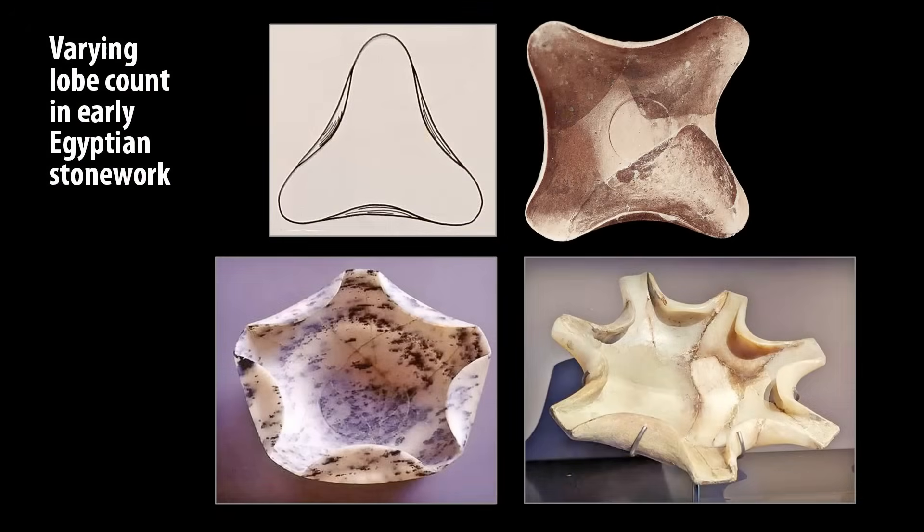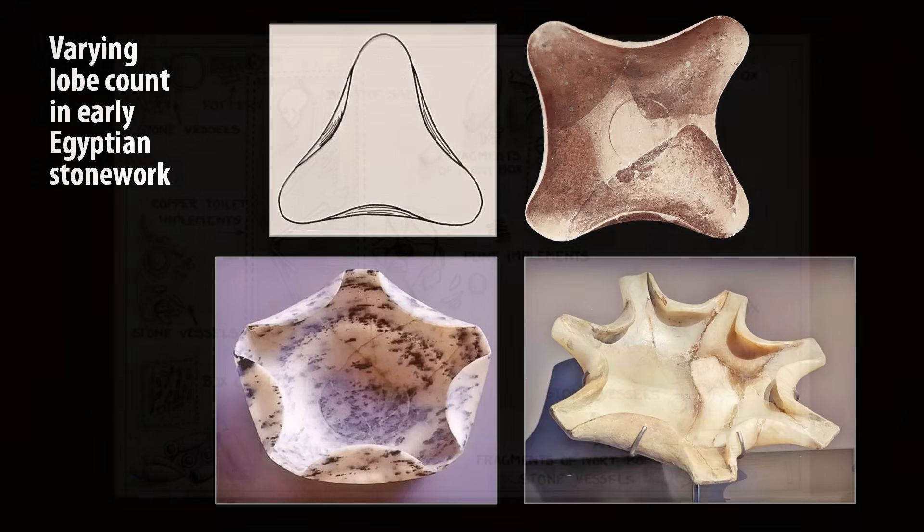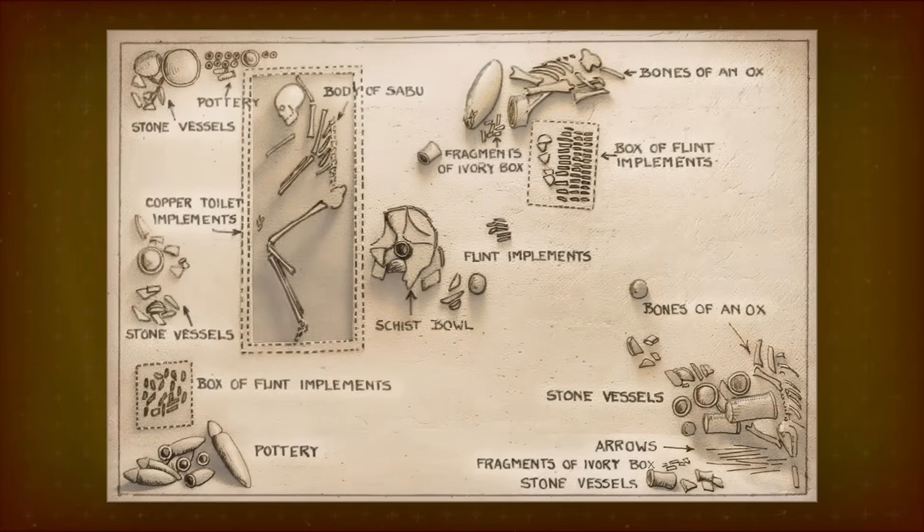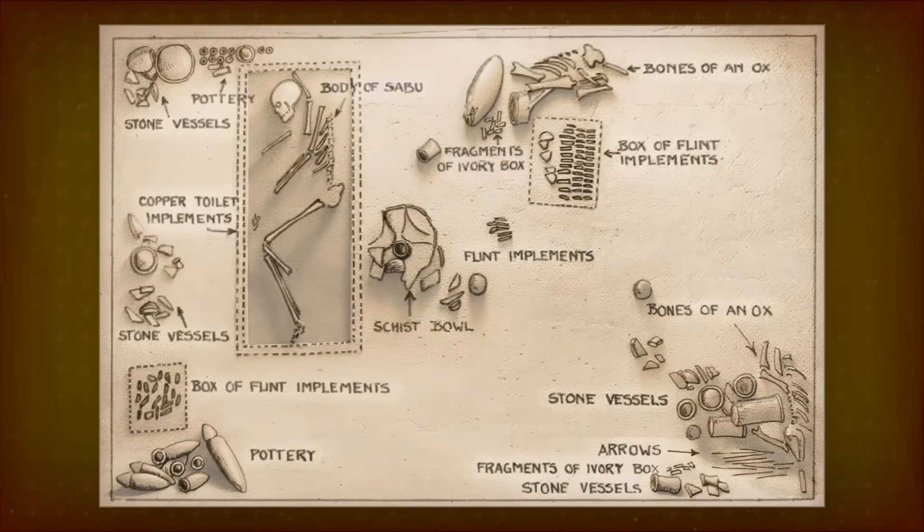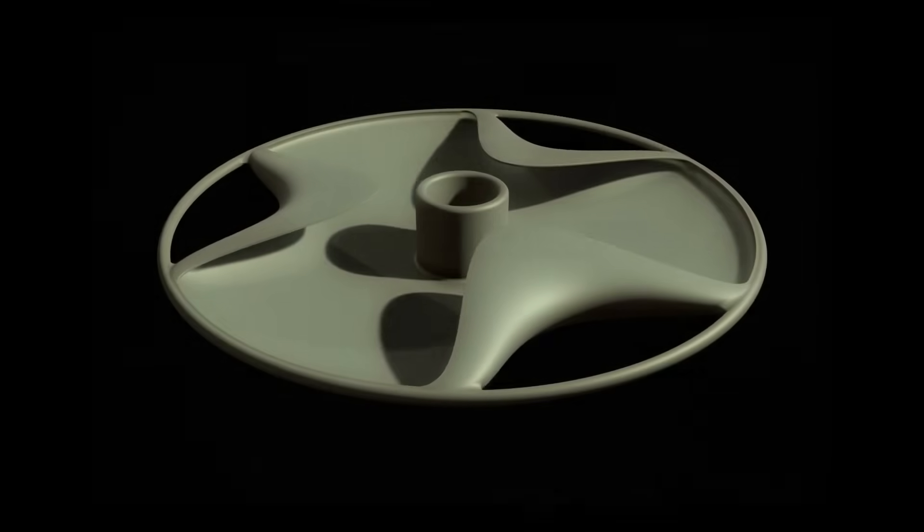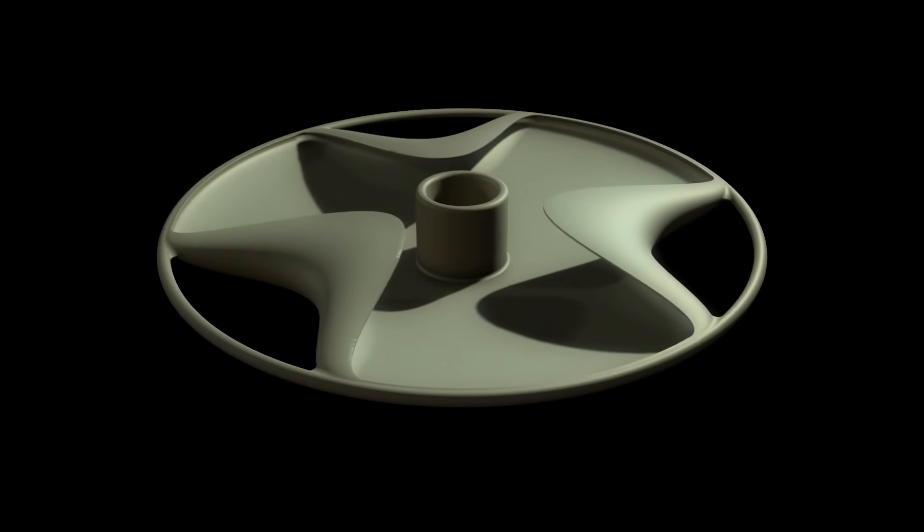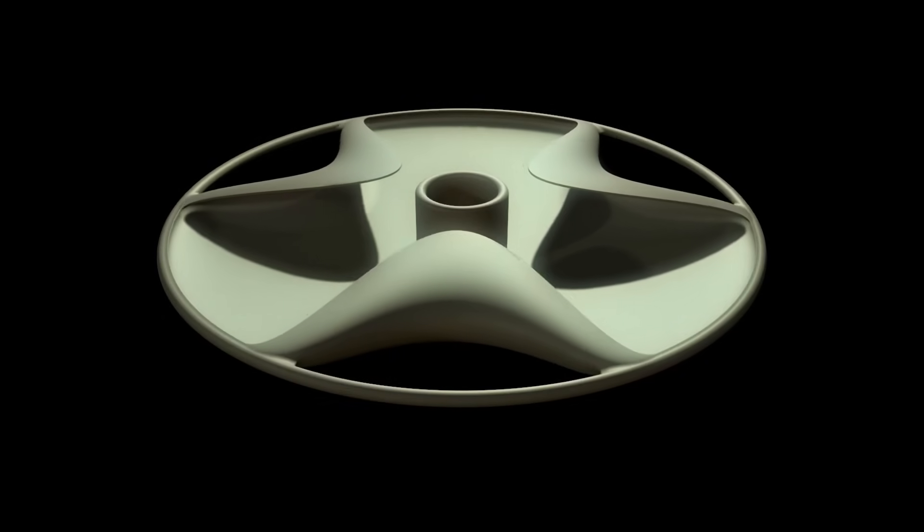It's unlikely that the threefold symmetry has a deeper meaning, as lobes in Egyptian vessels of that time come in many numbers. The prominent placement in the tomb suggests the disk was a prized object for Sabu. Besides the show of skill by the artist and the importance to the owner, did the disk have any actual practical function?